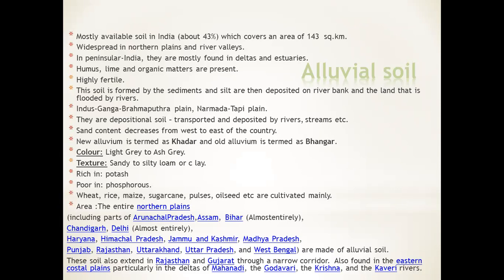Alluvial soil consists of depositional soils transported and deposited by rivers and streams. As the sand content decreases from west to east of the country, new alluvial soil is termed khadar and old alluvial soil is called bhangar. The color of alluvial soil is light gray to ash gray and the texture is sandy to silty loam and clay. It is very rich in potash but poor in phosphorus. The most important crops cultivated here are wheat, rice, sugarcane, pulses, and oil seeds.